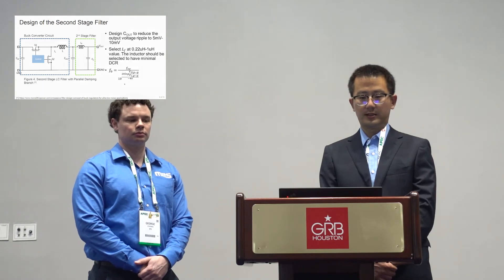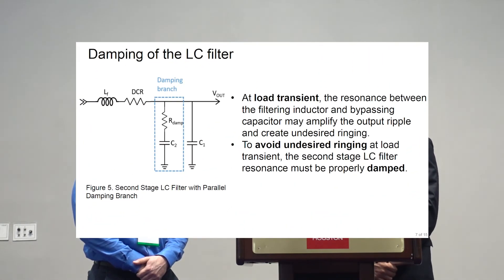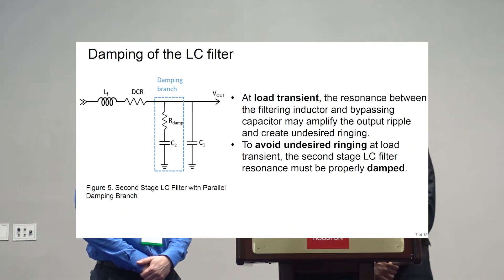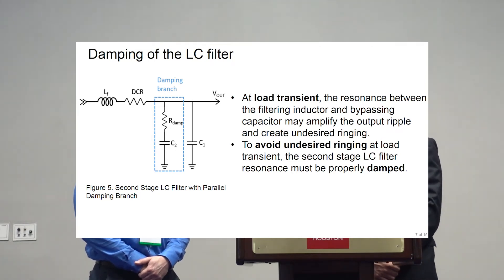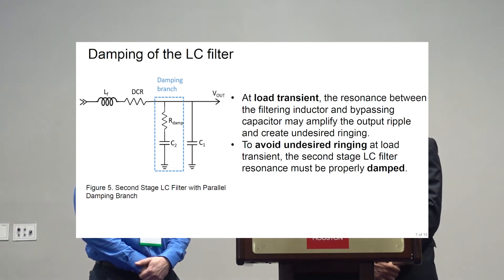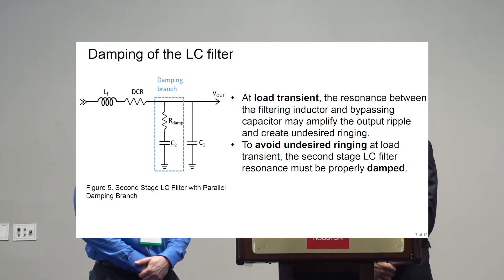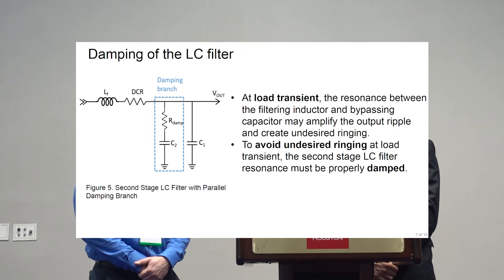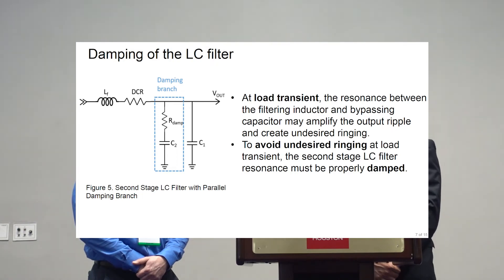As you can see in the simulation: for the under-damped system, during a load transient there are significant ringings for quite a while. But for the over-damped LC filter, the ringings are pretty limited. Here is the standard criteria to select the damping resistor value, which is based on the equation shown.